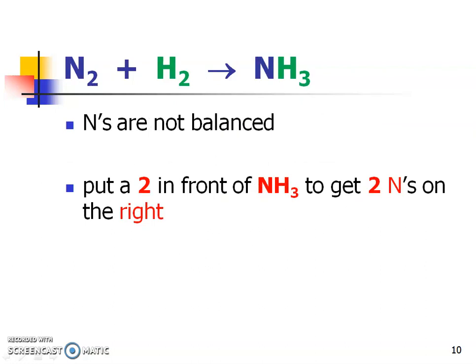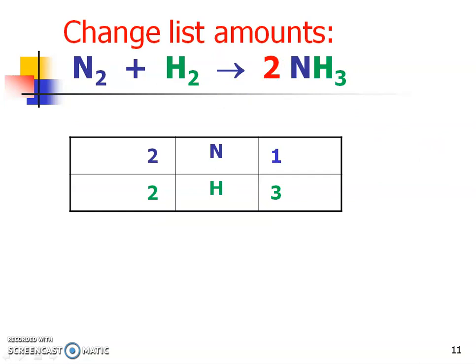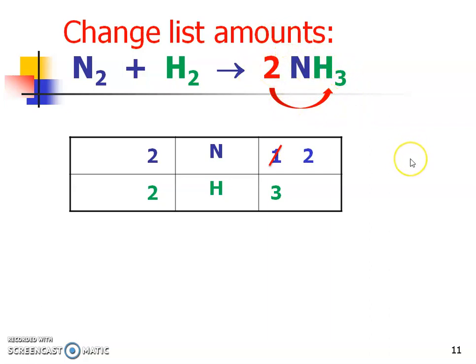Let's look at the nitrogens. Since the nitrogens are not balanced, one way to fix this is to put a two in front of ammonia to get two nitrogens on the right side. Now I have to change the amounts on the list — the two goes to the nitrogen, which is what I wanted. I suggest doing a cross-off and writing the new amount, because if I ever need to check your work, it's easy to see your starting point. Also remember: the two doesn't just affect nitrogen — it also affects hydrogen. Those coefficients affect every single element in that substance, so I'm going to cross off the three and put a six there.